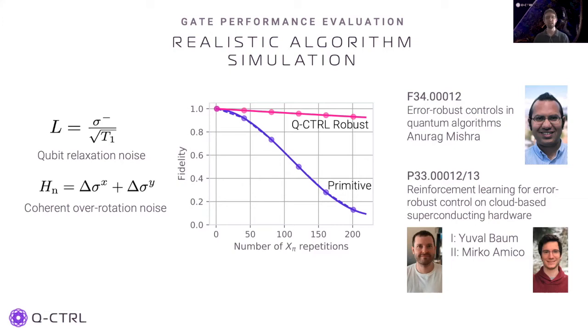In order to accurately simulate real hardware noise channels, the simulation parameters have been chosen based on results on an IBM device. We will soon be doing algorithm demonstrations on real hardware, and for progress towards this work, you can check out the talks by Yuval and Mirko demonstrating improvements to two qubit gates on quantum hardware.